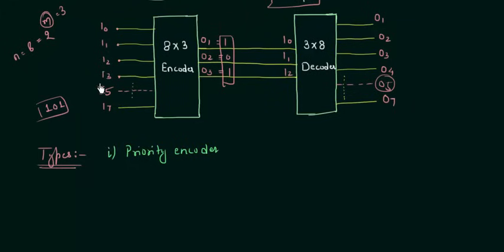If I say instead of only one input being high, let's say two inputs are high, I3 and I5, then what will be the output of the encoder? It depends upon the priority that we set. Either we will set the low priority where the bits with the lower order are much prior, or we set the priority with the bits having the higher order. That we will see separately in the lecture when we discuss the priority encoder.